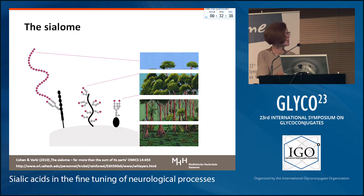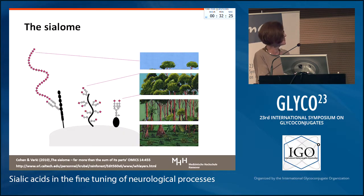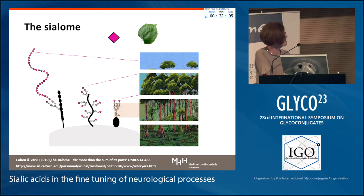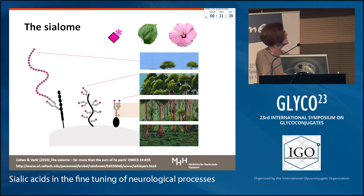I really like the conceptualization that Ajit Varki chose to demonstrate how complex the information of the glycome is. He compared it to the canopy of a forest. He called the overall structure the tree, with a stem region. Then we have the branches, and the sialic acids form the leaves. So we have the stem and the branches, and then we add the leaves in the form of sialic acid. What I add to this picture is that we also have modified sialic acids — with phosphates, sulfates, and O-acetylation.